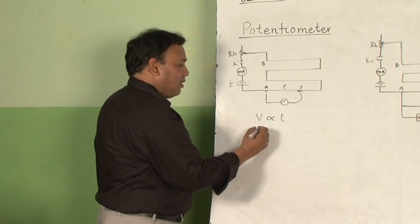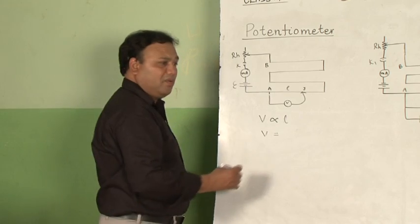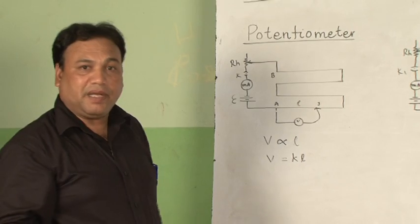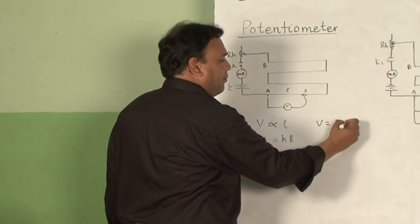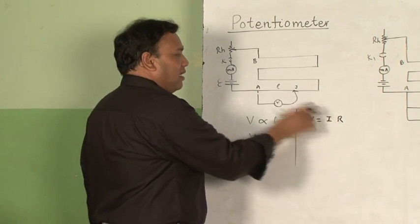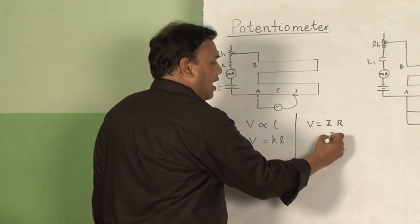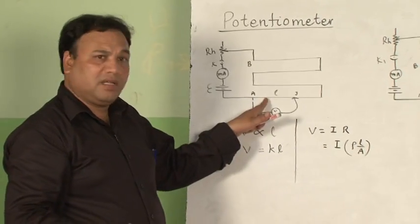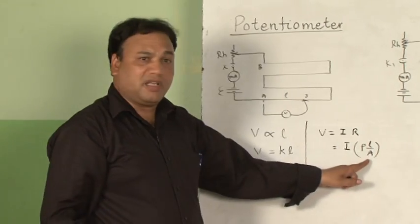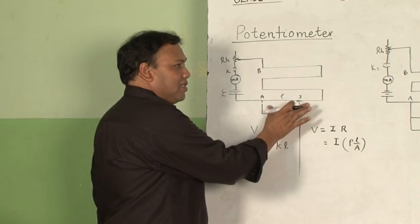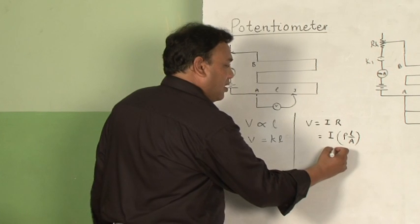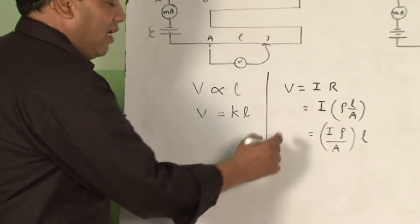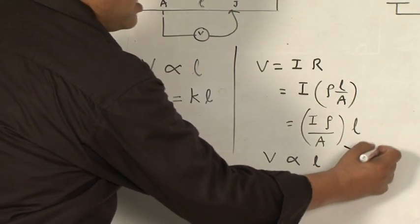V is directly proportional to L, or in equation form, V equals some constant K multiplied by L. This comes from Ohm's law: V equals IR, where R can be written as ρL/A. Since we are not changing the area of cross section and current is also kept constant, I, ρ, and A are all constants — only L is changing. Therefore V is directly proportional to L, and the constant K equals IρA.